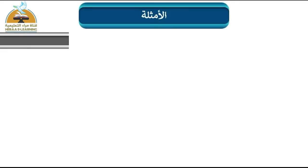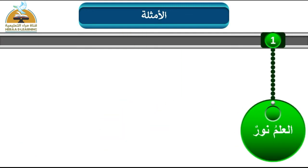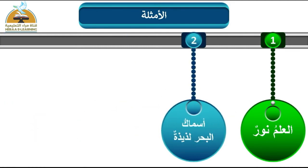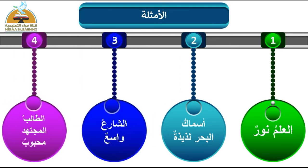هيا نشوف الأمثلة ونوضحها مع بعض. المثال الأول: العلم نور. المثال الثاني: أسماك البحر لذيذة. المثال الثالث: الشارع واسع. المثال الرابع: الطالب المجتهد محبوب.